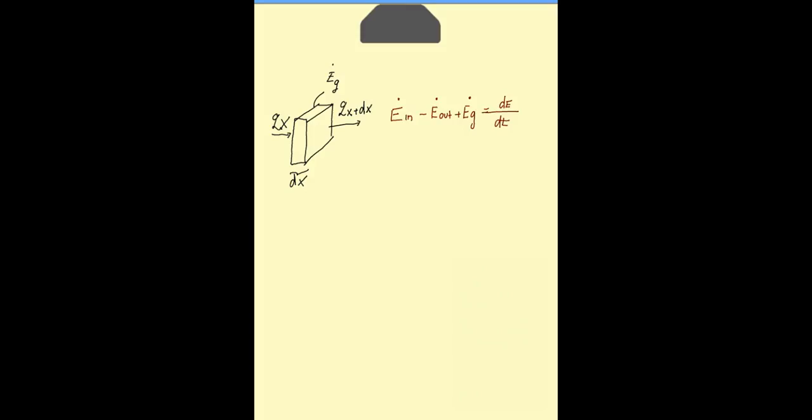So this is our differential volume and the general energy balance over this volume. We have the energy into the system minus the energy out of the system, plus heat generation rate within the differential volume. These equals the change of the internal energy of the system.